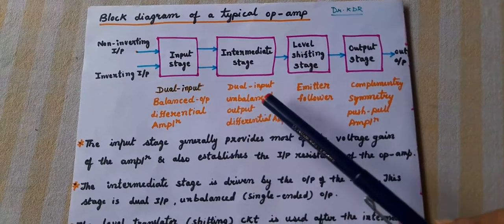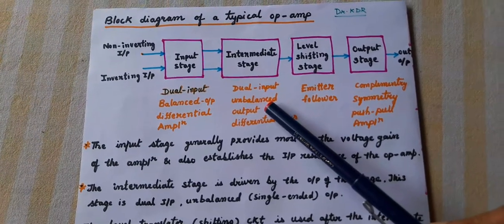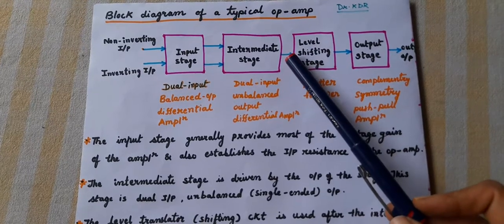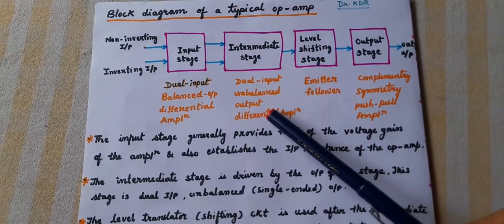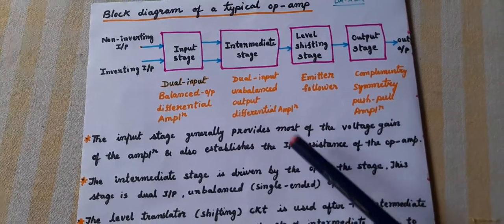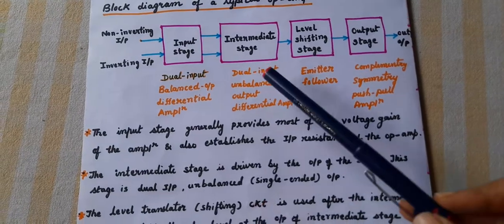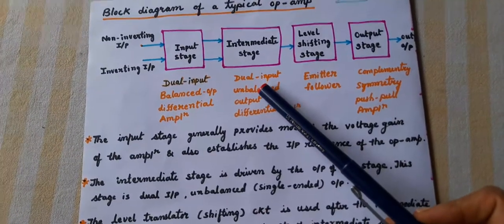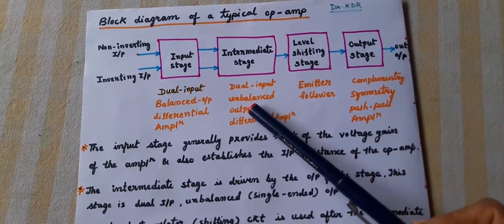Coming to the second stage, the intermediate stage is comprising of dual input, unbalanced — because of single-ended output — unbalanced output differential amplifier. This stage is driven by the output of the first stage and is also used for enhancing the gain, contributing to the overall gain of the op-amp.